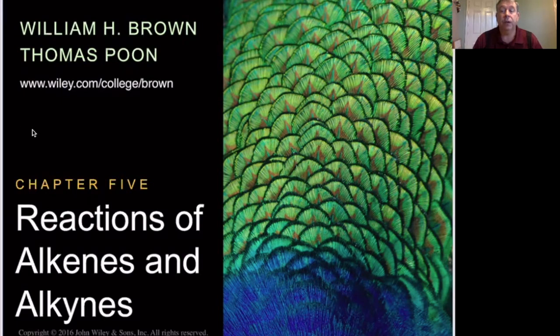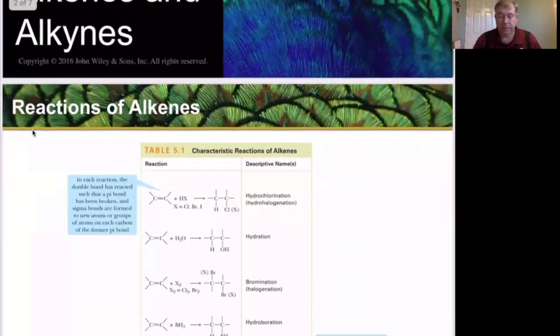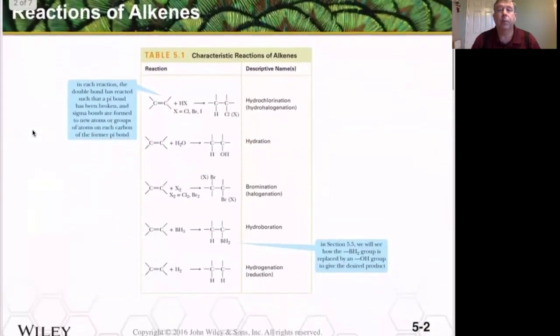Today we will start Chapter 5, Part 1, Reactions of Alkenes and Alkynes. In this chapter we're going to learn a lot of different reactions with alkenes. A lot of them are going to be adding something across that double bond we created.